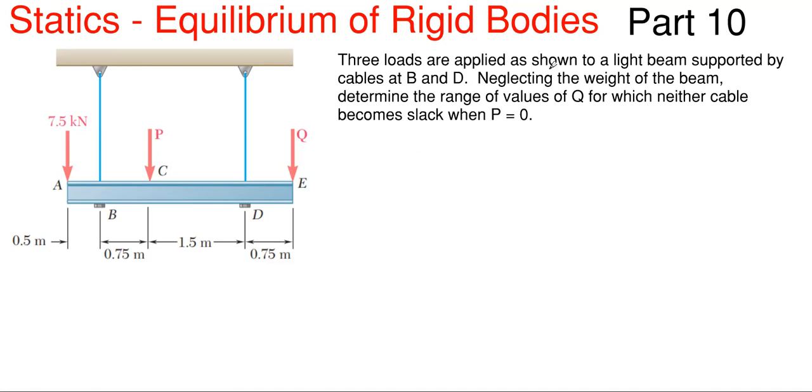So what we have going on is that we have three loads that are applied as shown to a light beam supported by cables B and D shown here on the left. Neglecting the weight of the beam, determine the range or the range of values for Q for which neither cable becomes slack when P is equal to 0.